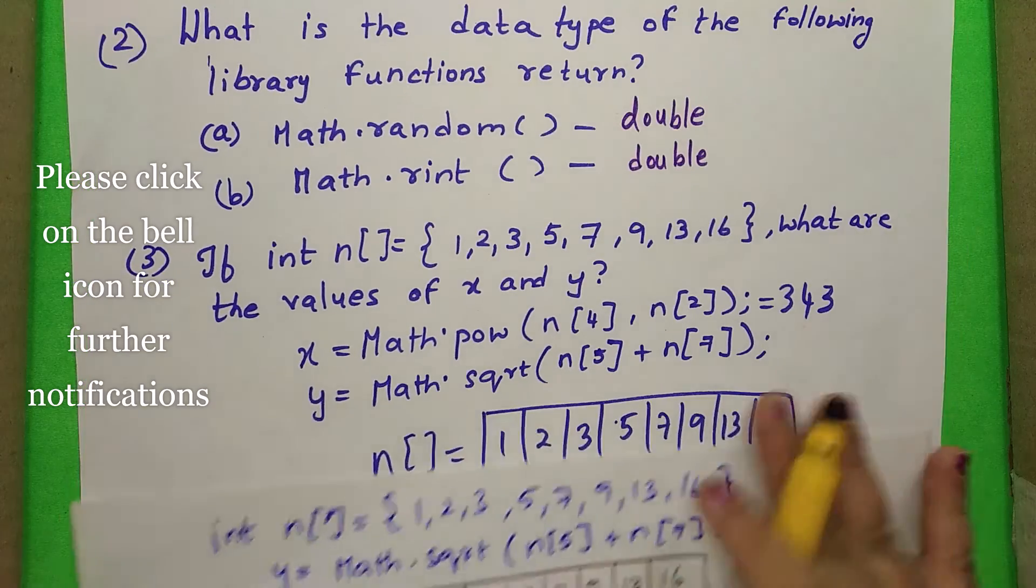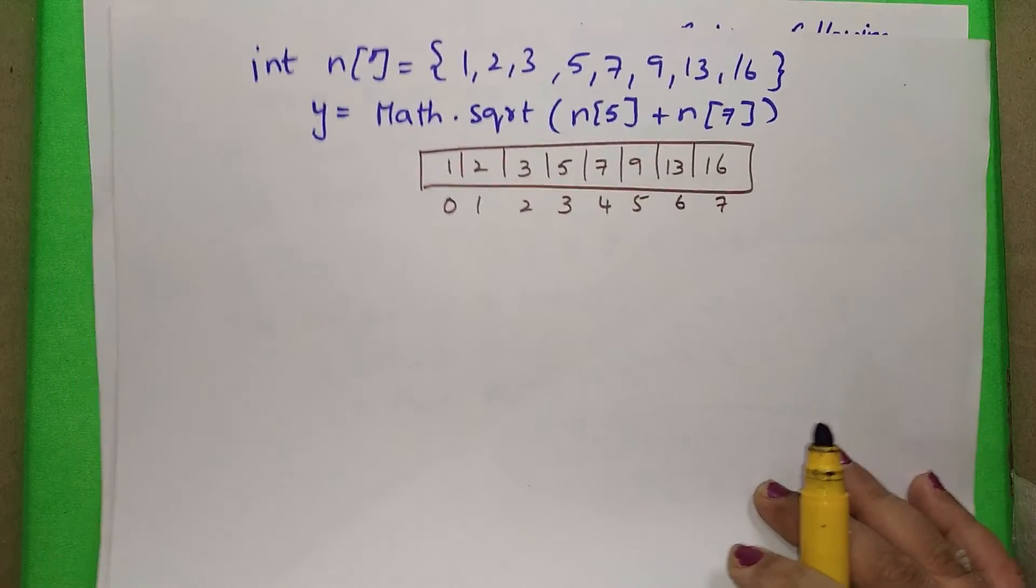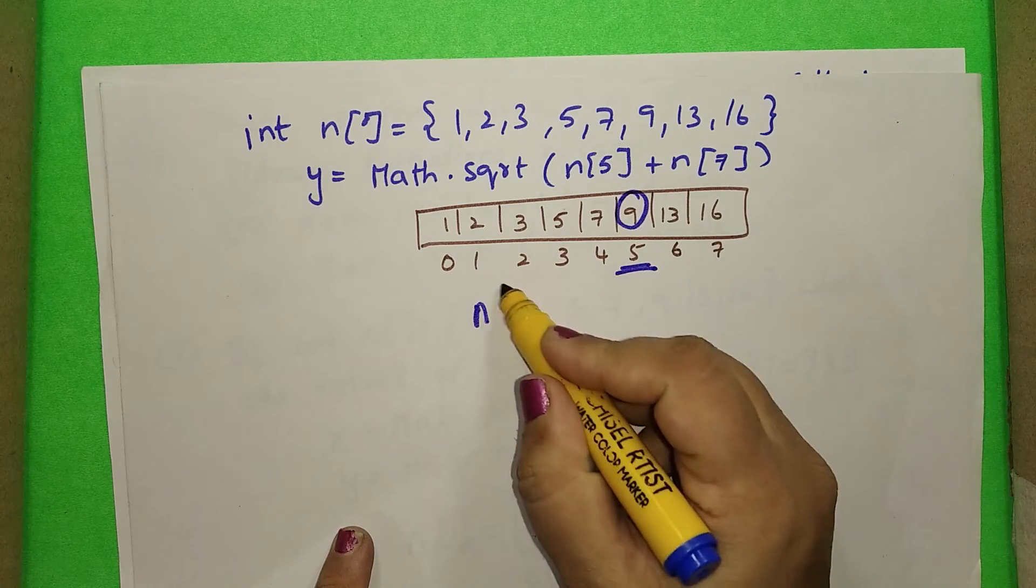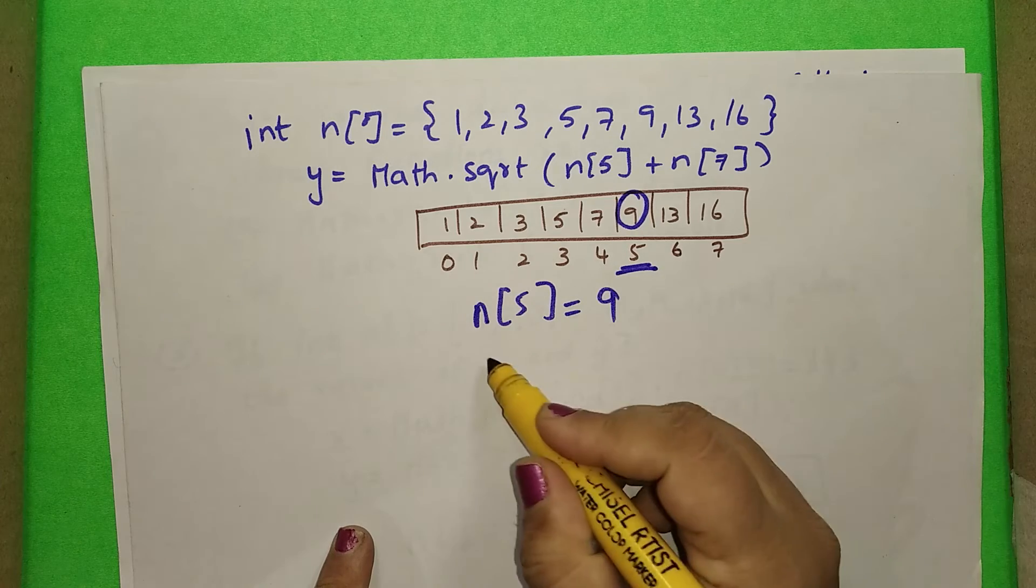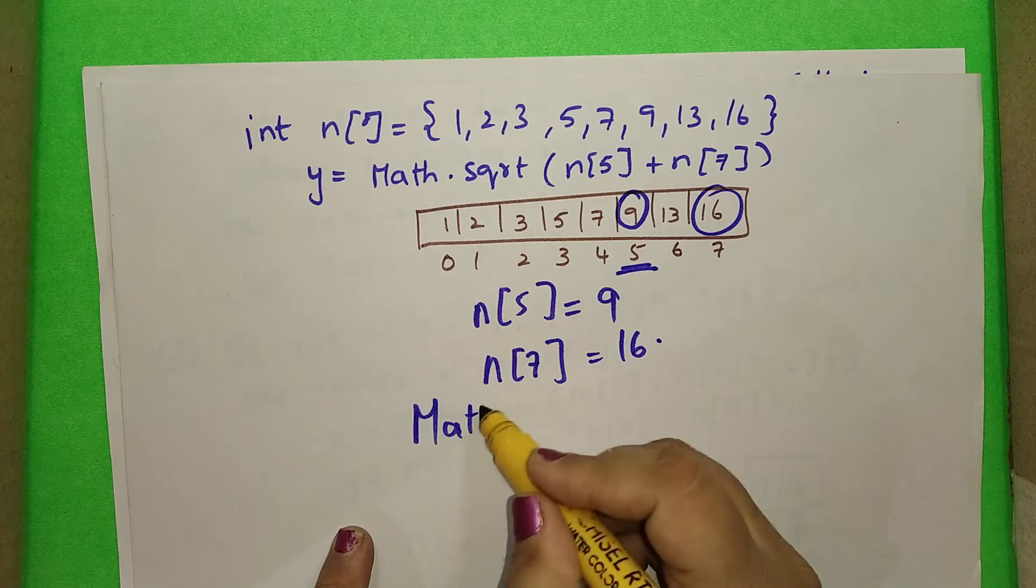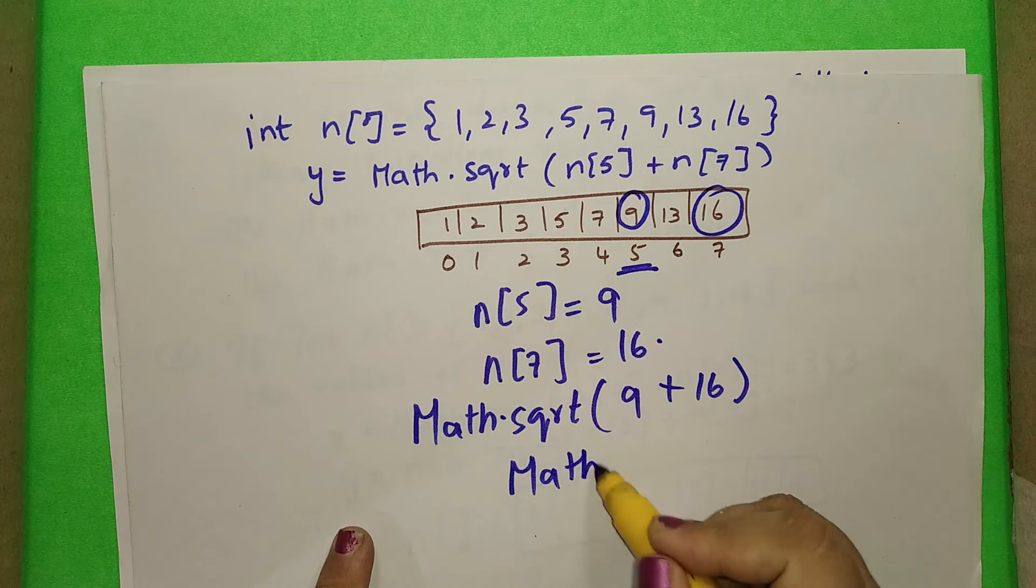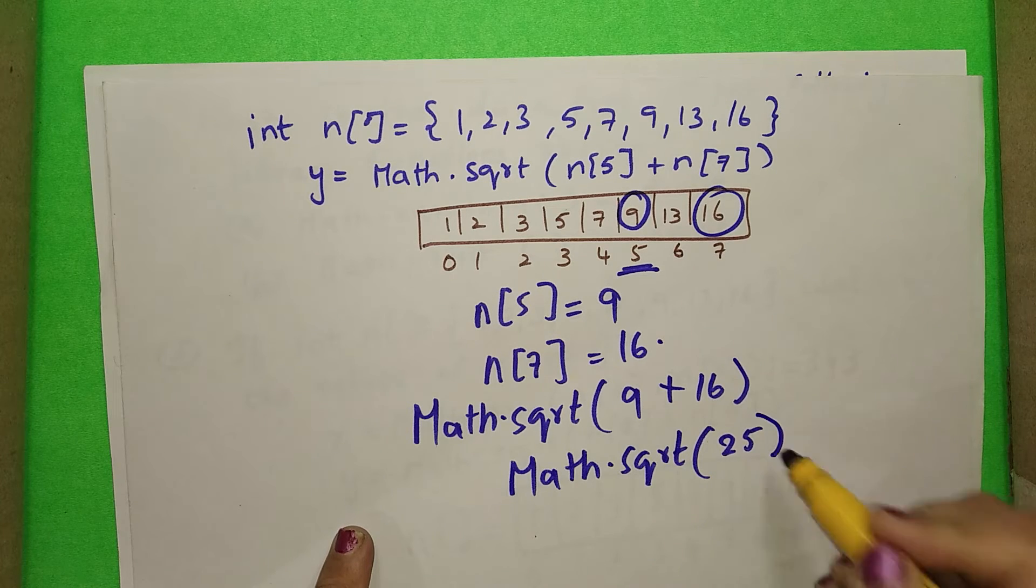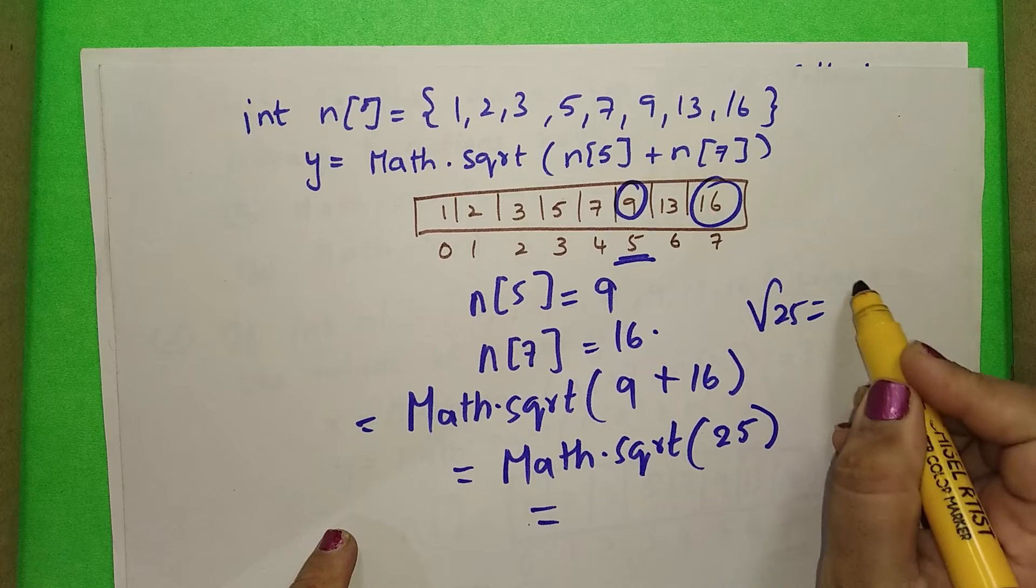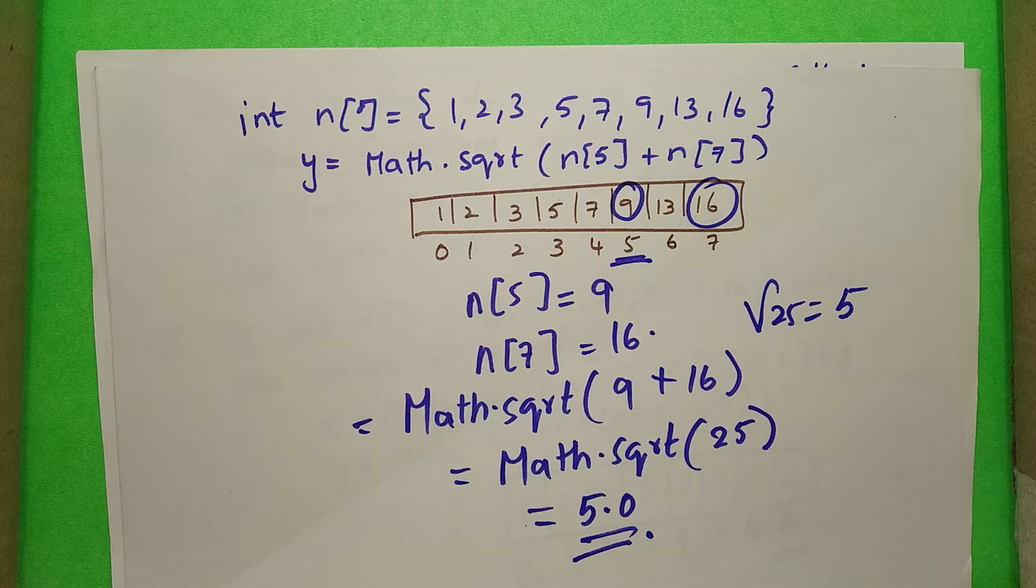Let us continue with the second part of this question. Math dot square root of n of 5 plus n of 7. I have written it here. Here what is n of 5 for me? This is the fifth index. n of 5 for me is 9. n of 5 is 9. And what is n of 7? n of 7 is 16. Here this particular thing it will be math dot square root of 9 plus 16. Math dot square root of 9 plus 16 is 25. This is 25. Here you will get this square root of 25 is how much? Square root of 25 is 5. Answer will be 5.0. Hope you understood this problem.